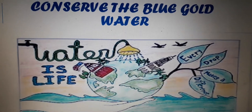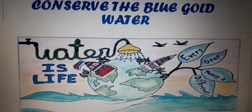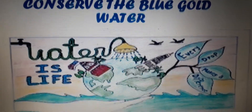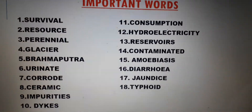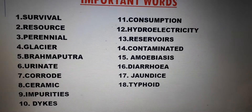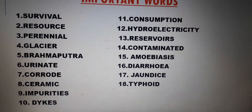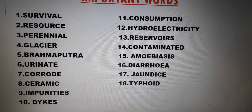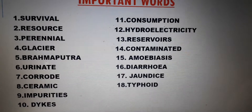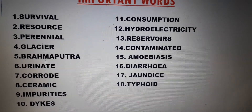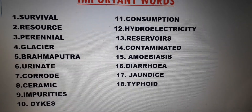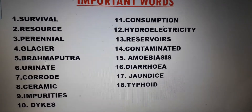Please read the whole chapter thoroughly and after that underline these important words in your book: survival, resource, perennial, glacier, Brahmaputra, urinate, corrode, ceramic, impurities, dikes, consumption, hydroelectricity, reservoirs, contaminated, amoebiasis, diarrhea, jaundice, and typhoid.